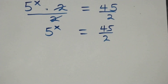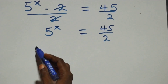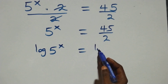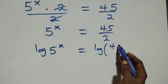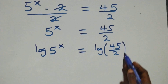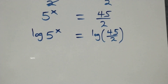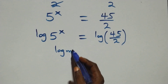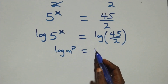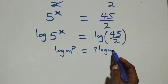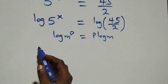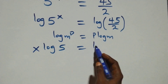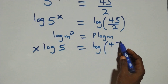The next step here, we take the log on both sides. That is, we have log of 5 raised to power x equals to log of 45 over 2. We apply the power law of logarithm: log m raised to power p is the same as p log m. So this becomes x log 5 equals to log 45 over 2.